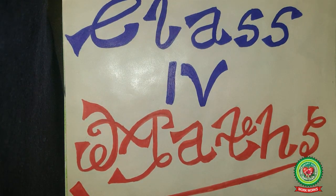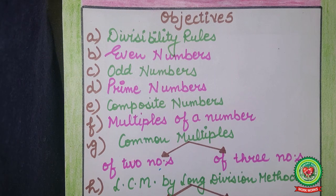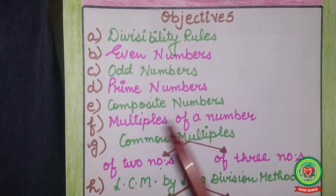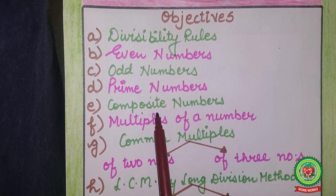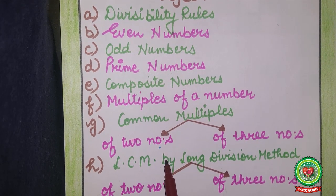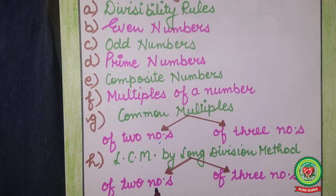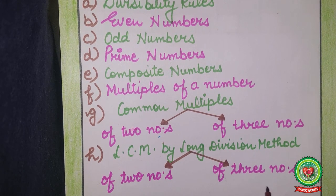Hello students, welcome to math class. In chapter Factors and Multiples, we have already covered divisibility rules, even numbers, odd numbers, prime numbers, composite numbers, multiples of a number, common multiples, and LCM of two numbers by the long division method. Today I will discuss how to find the LCM of three numbers by the long division method.